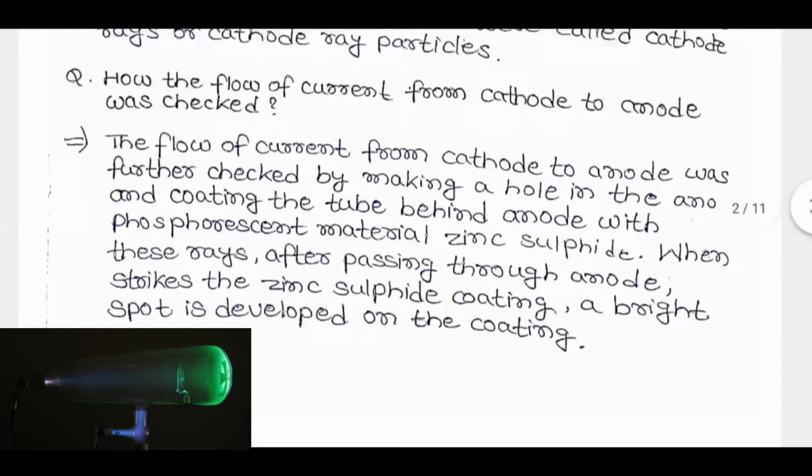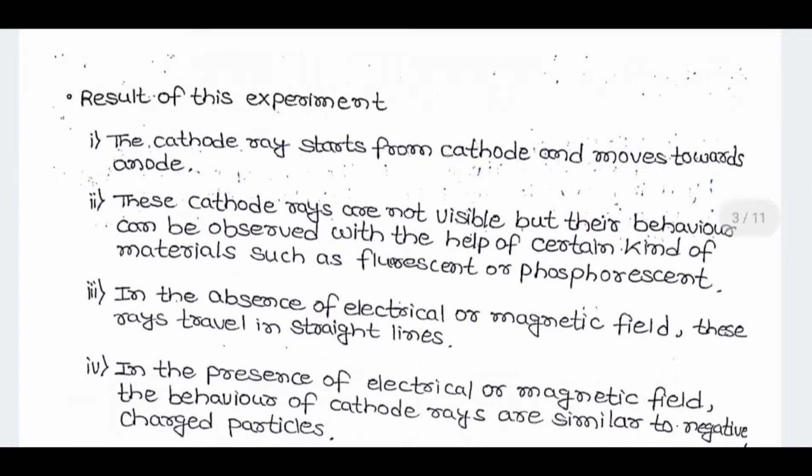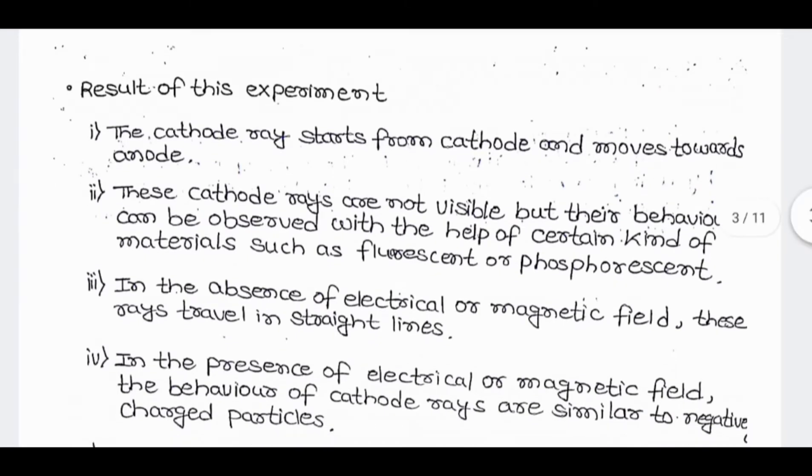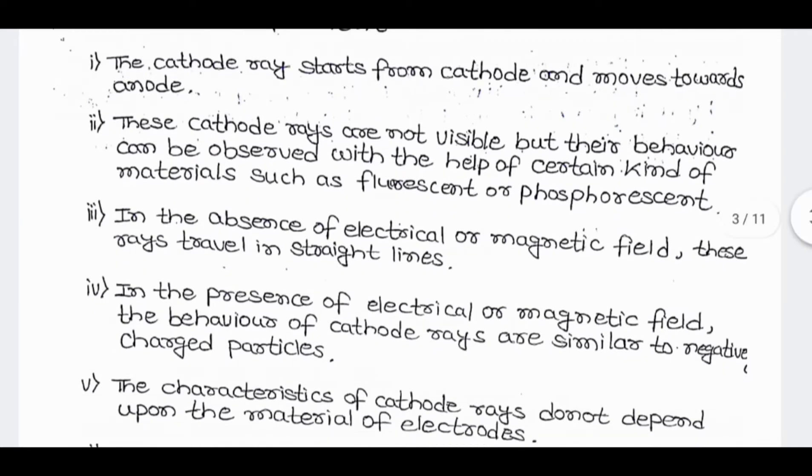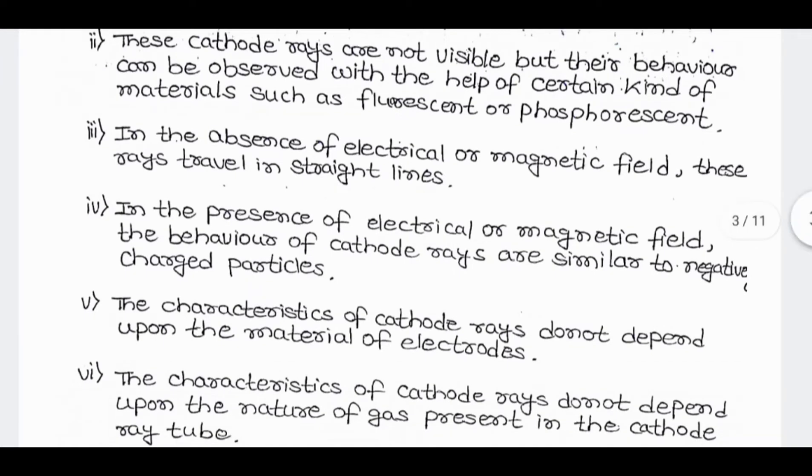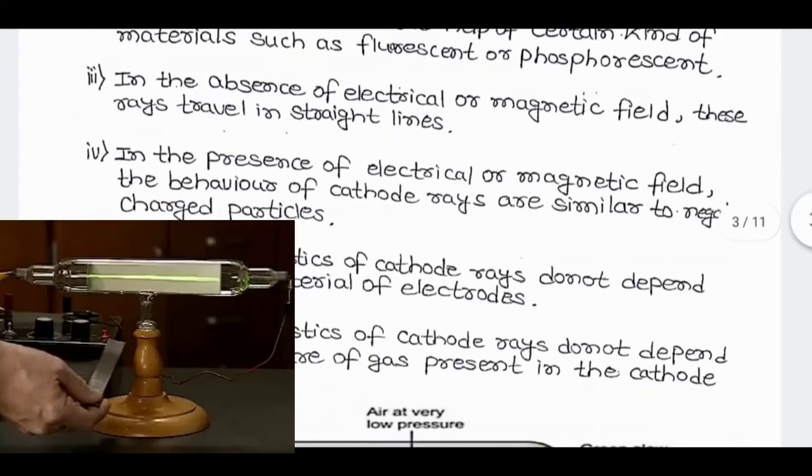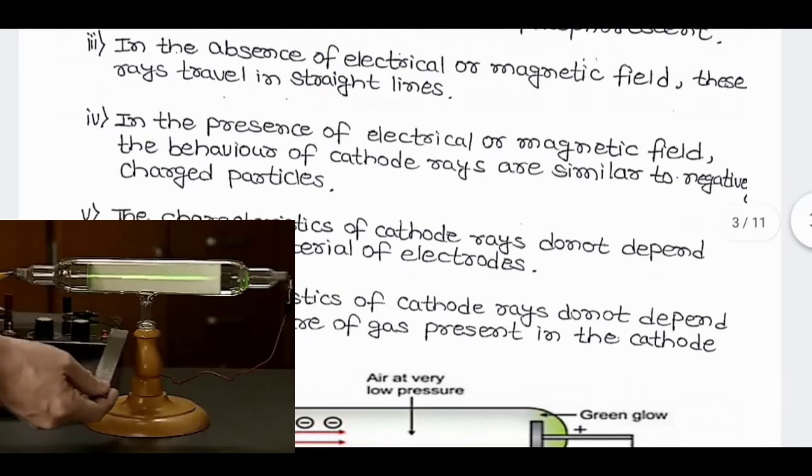Result of this experiment: The cathode rays start from cathode and move towards anode. These cathode rays are not visible but their behavior can be observed with the help of certain kinds of materials such as fluorescent or phosphorescent. In the absence of electrical or magnetic field, these rays travel in the straight line.